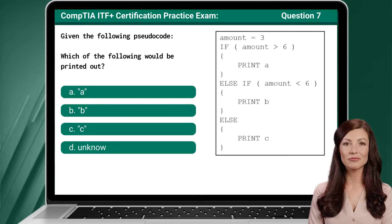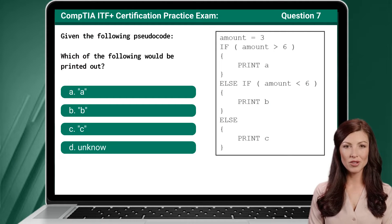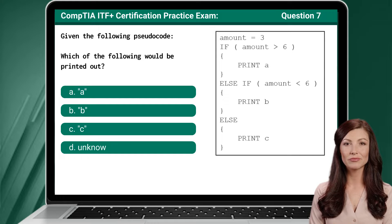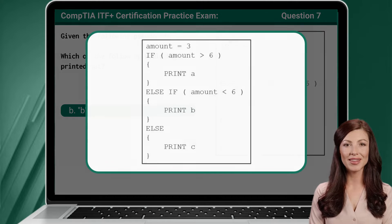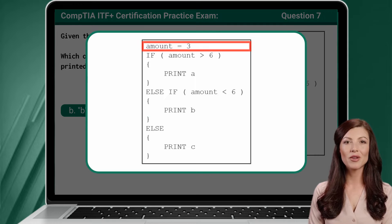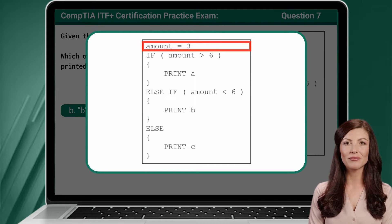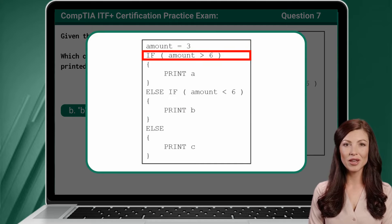Question 7. Given the following pseudocode, which of the following would be printed out? The answer is B. In this coding example, we start by declaring the amount variable and assigning it the value of 3. We then encounter an IF branching statement.